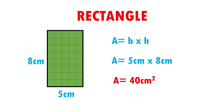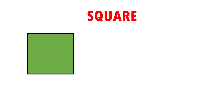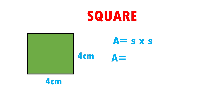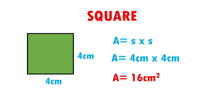This means that our rectangle can fit 40 squares of 1 cm per side. Very easy, right? Let's see another example. Here I have a square with measurements of 4 times 4. The formula to calculate the area of a square is area is equal to side times side. When substituting data, area is equal to 4 cm times 4 cm, which gives area equal to 16 cm squared.